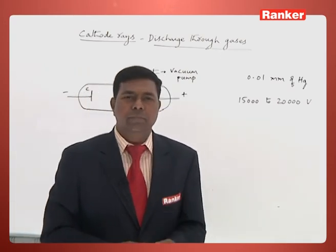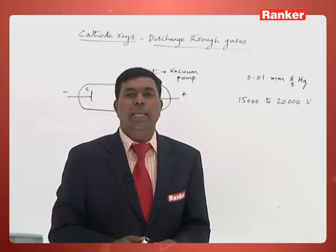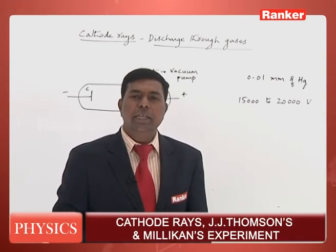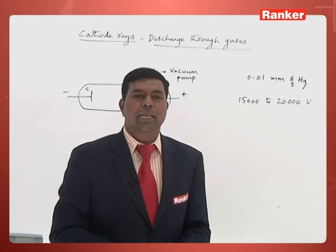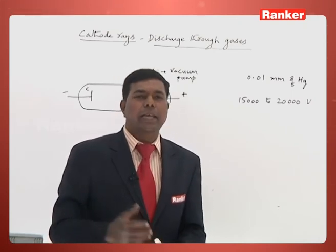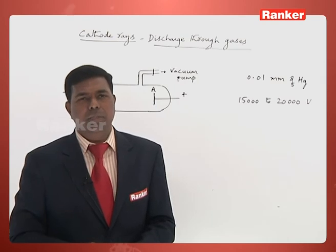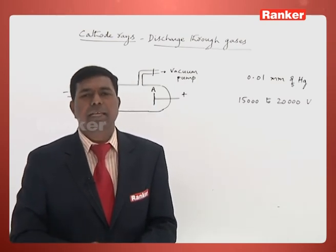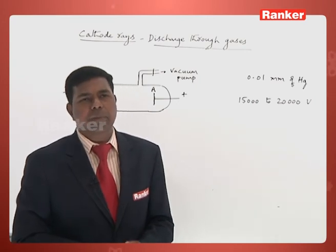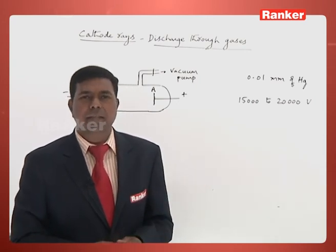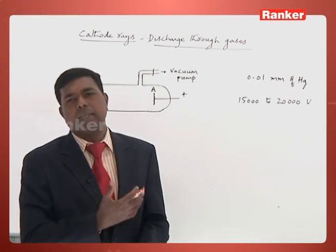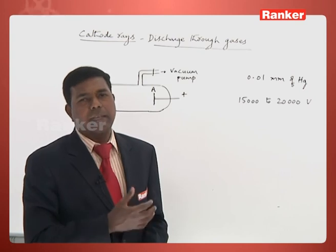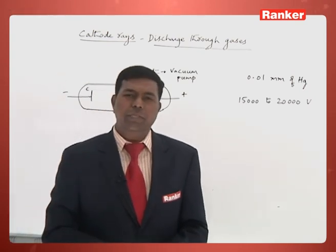Cathode rays travel in straight lines and have momentum and energy. They can be deflected by electric and magnetic fields, and the direction of deflection indicates they are negatively charged particles — later named electrons. The charge-to-mass ratio of these particles remains constant irrespective of the gas inside the tube. This experiment led to the discovery of the electron.